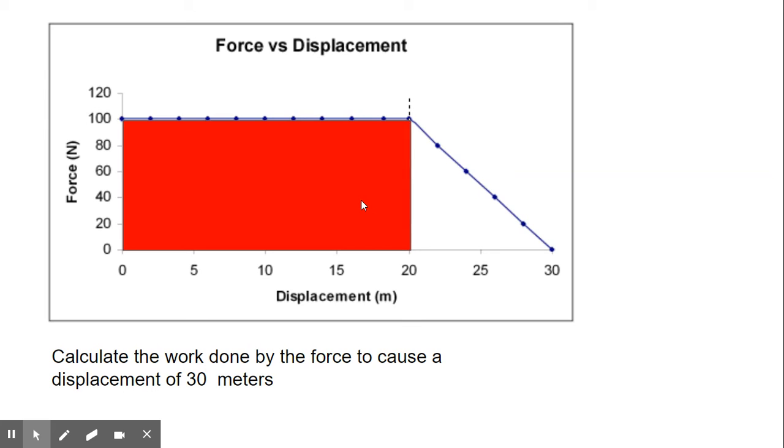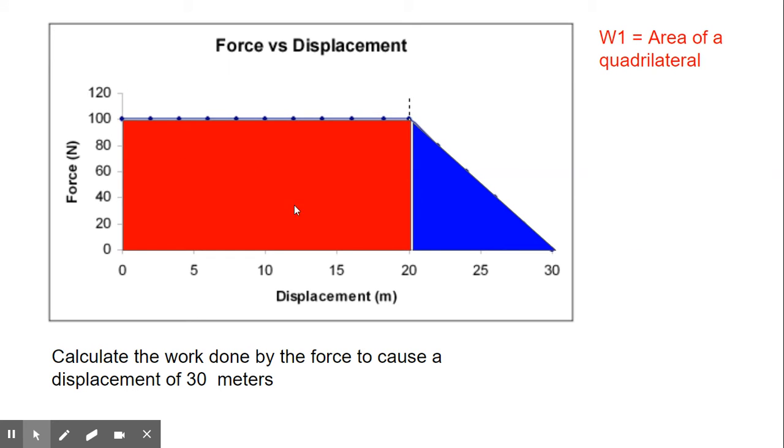So this is the first area, it's another quadrilateral. And this is the second area of this graph under the curve. So to calculate the first area, or the area of the quadrilateral, it is length times width, and the length is 100, and the width is 20. So work on the first area is 2000 newton meters, or 2000 joules.